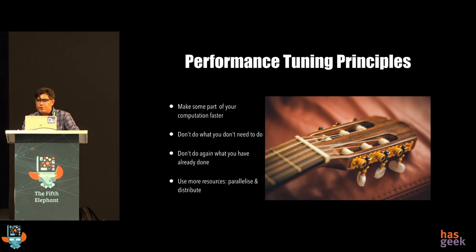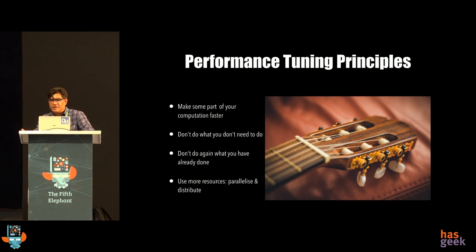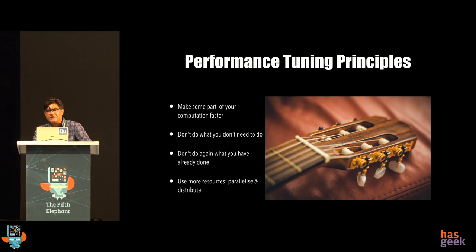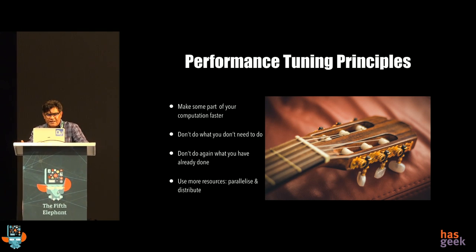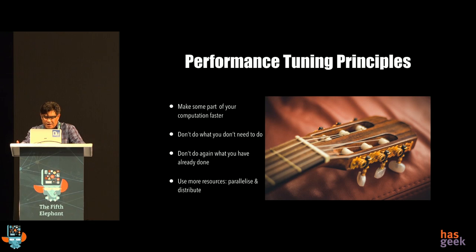Maybe you're using an order-n-squared algorithm — we can sort of use an order-n-log-n approach and that makes life easy. You can also do things like use a better instance type on the cloud, which has more compute. Making some part of the computation faster will obviously reduce the total time.